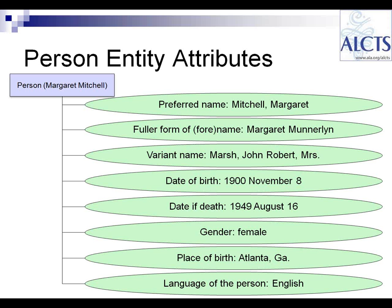The attribute gender in RDA can be recorded as male, female, or unknown; if none of these terms is appropriate, another may be provided by the cataloger. Place of birth and language of the person are other possible attributes to record. Note that only a few elements are core or required. Preferred name and dates are core, meaning if known, they must be recorded as elements in the RDA record, though dates don't necessarily have to be part of the access point.